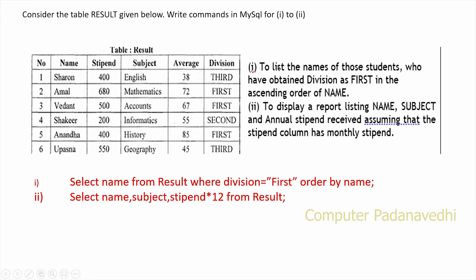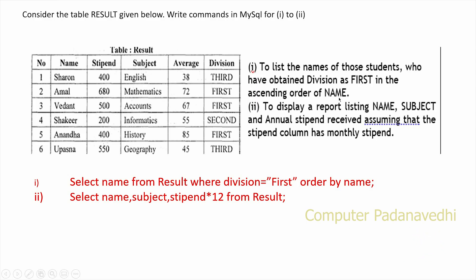To list the names of those students who have obtained division as 'First' in the ascending order of name from the result table: SELECT name FROM result WHERE division = 'First' ORDER BY name.